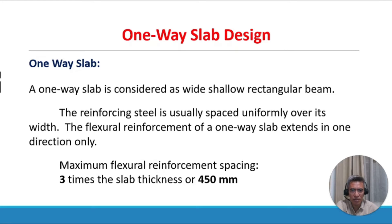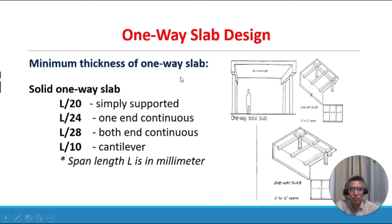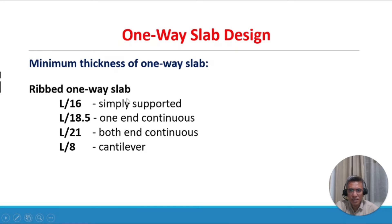Minimum thickness of one-way solid slab: L/20 for simply supported, L/24 for one end continuous, L/28 for both ends continuous, and L/10 for cantilever, where span length L is in millimeters. For rib one-way slab, minimum thickness is L/16 for simply supported, L/18.5 for one end continuous, L/21 for both ends continuous, and L/8 for cantilever.